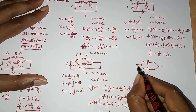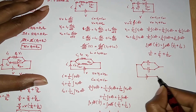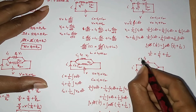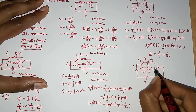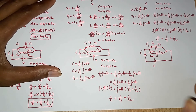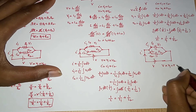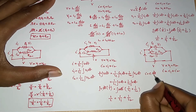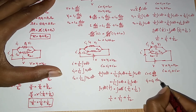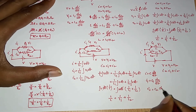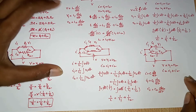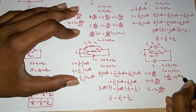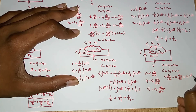For capacitors in parallel connection: voltage V is applied across C1 and C2. In parallel, V equal to V1 equal to V2, but I equal to I1 plus I2. I equal to C times dV by dt, I1 equal to C1 times dV1 by dt, and I2 equal to C2 times dV2 by dt. Substituting: C dV by dt equal to C1 dV1 by dt plus C2 dV2 by dt.